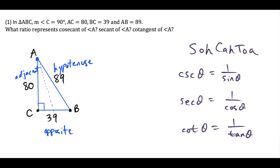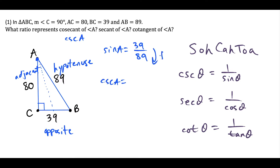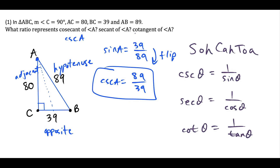So if I want to find cosecant of angle A — that's CSC(A) — what I could do is find sine of angle A first. The ratio for sine of angle A is the side opposite of A, which is 39, over the hypotenuse, which is 89. So cosecant of angle A is simply the reciprocal of this — flip it — and that gives us 89 over 39.